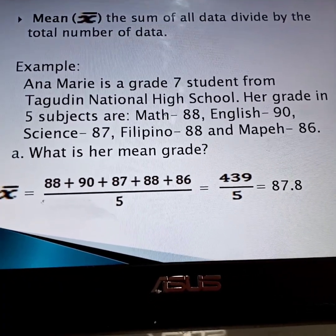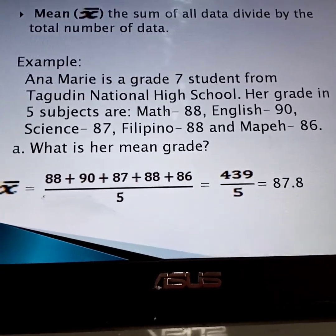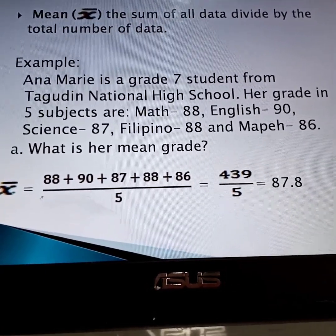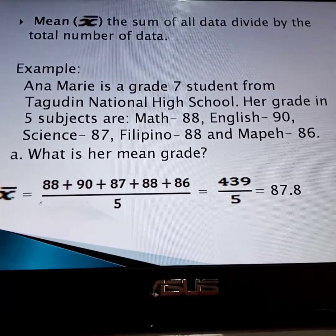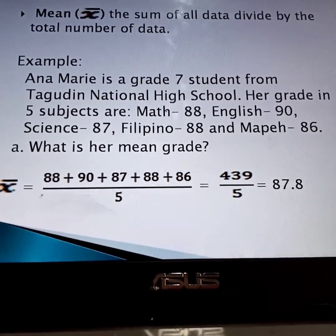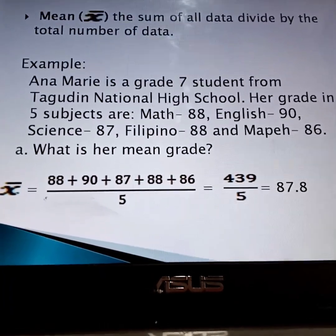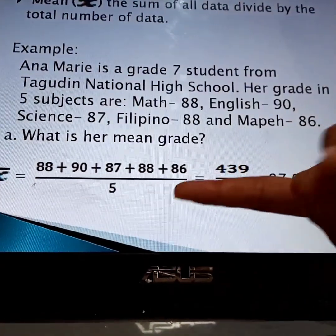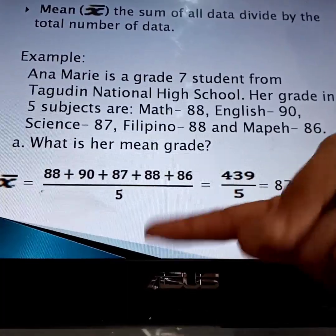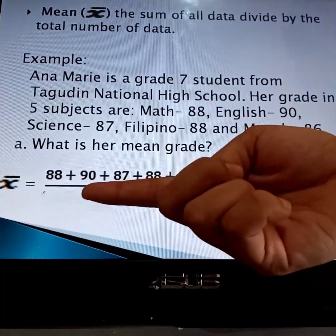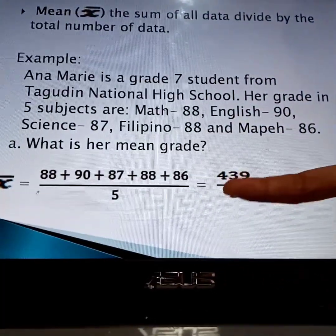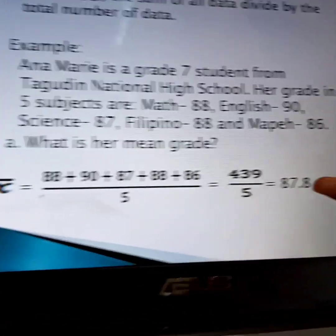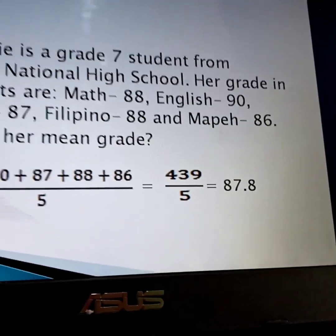Let's define what is the meaning of mean. Mean is the sum of all data divided by the total number of data. Using the Anna Marie example problem, we will add all the given grades and divide by 5 subjects. Since we add all the grades, we get 439 divided by 5 subjects, which gives us 87.8.